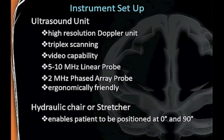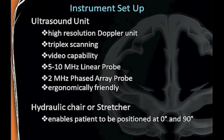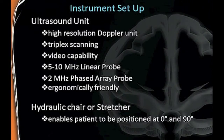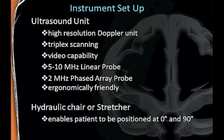For instrument setup, you need an ultrasound unit with high-resolution Doppler. Triplex scanning is a must. These are veins—they're very small, and there are multiple veins in an area. If you're specifically targeting one and the patient breathes the wrong way or your hand moves slightly, you'll be in a totally different vein that could be flowing in a different direction. So you want to be in triplex mode to be sure you're on the correct vessel.